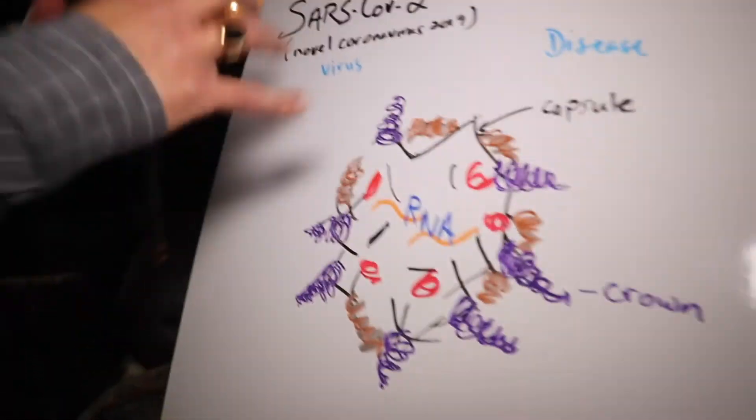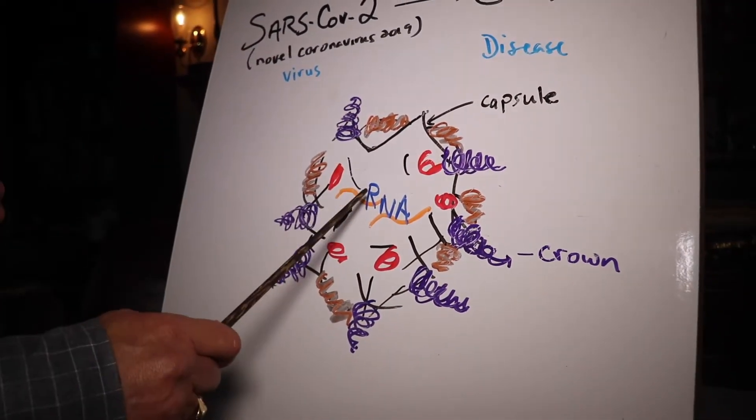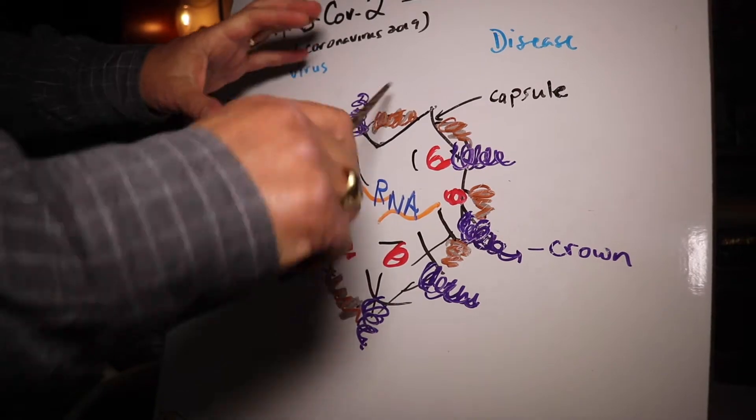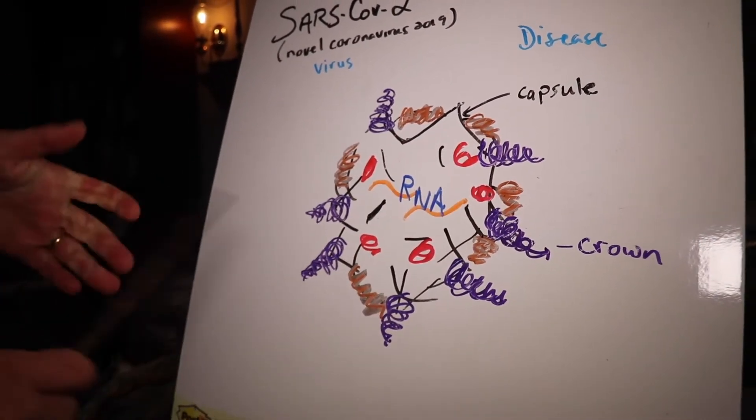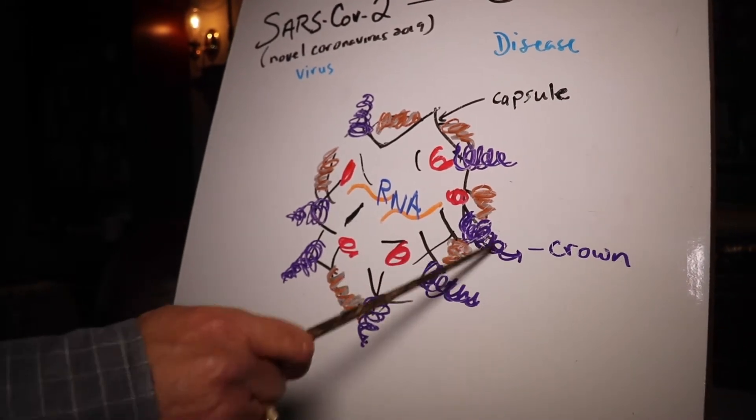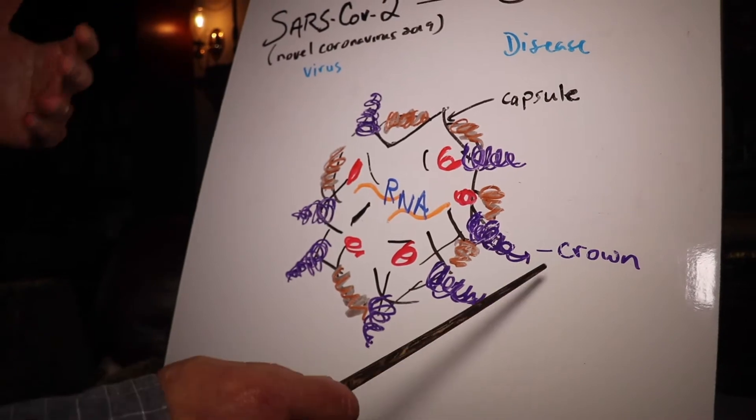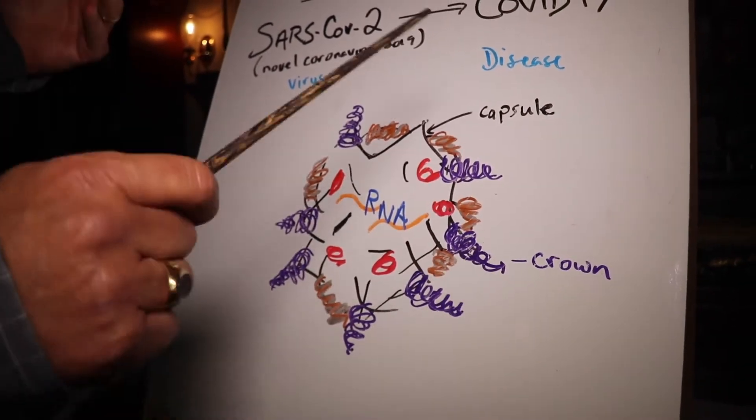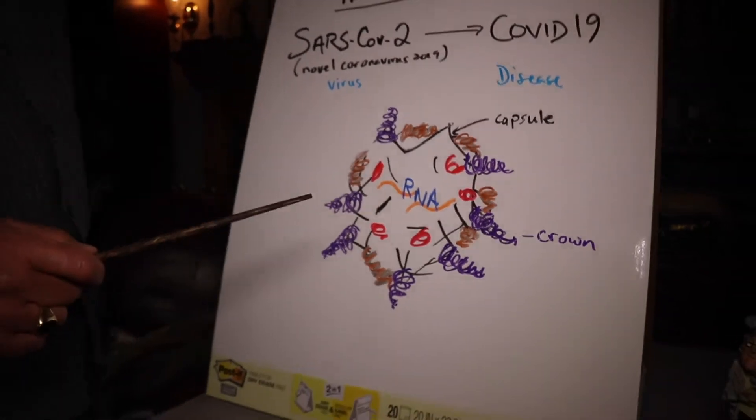This virus is really a capsule, a little sac that contains a code, in this case called RNA. This capsule has on it little particles or pieces, and there are different colors here in the diagram. Pay close attention to this one, the spiral one. These point out and give it an appearance of a crown, which gives this the name coronavirus, all these viruses because of the crown. We'll come back to this in a moment.